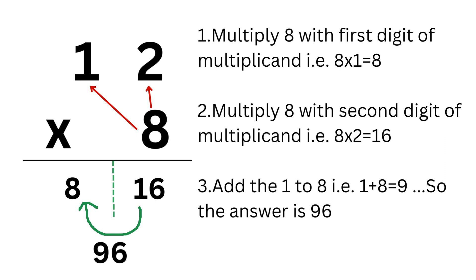Now let's start solving this problem using the dodging method. Step 1: Multiply the multiplier with the first digit of the multiplicand, that is 8×1 which gives us 8. This is the first part of the answer.